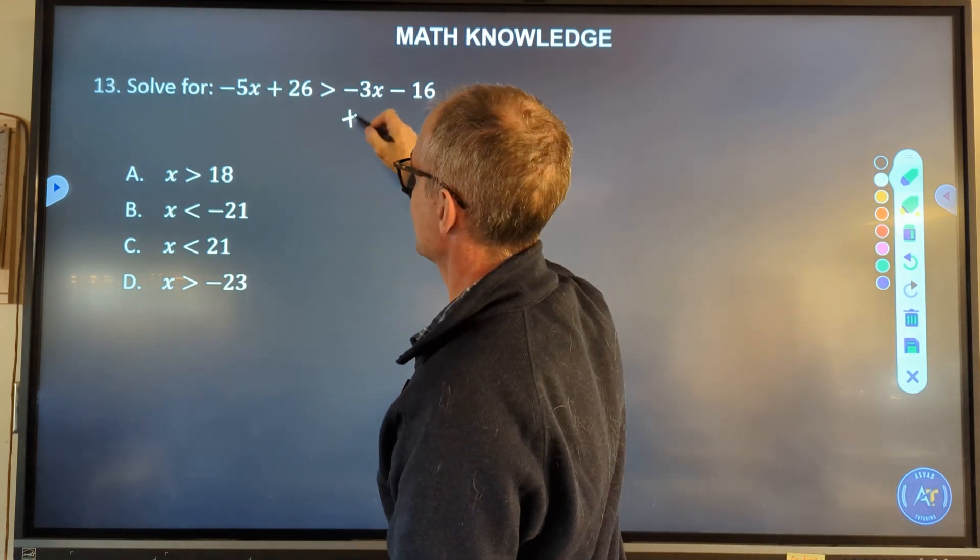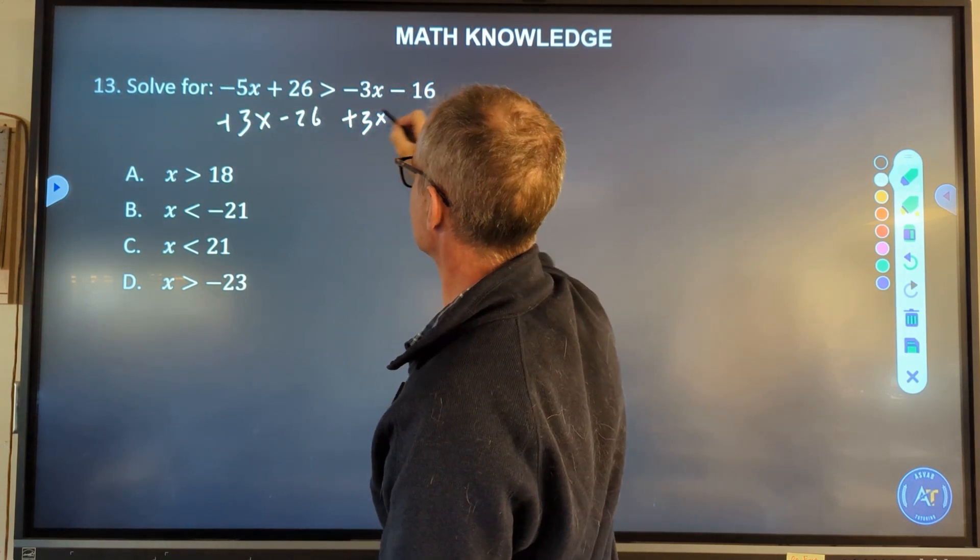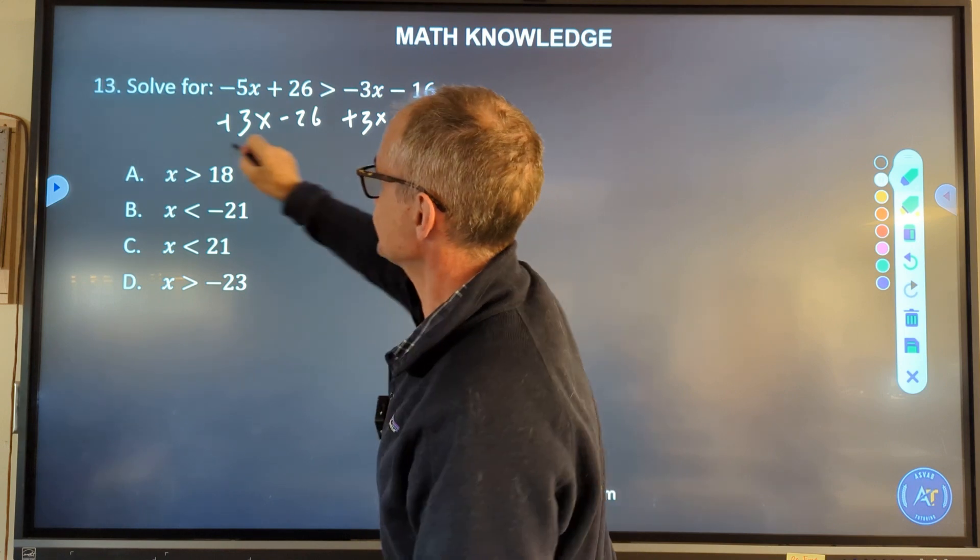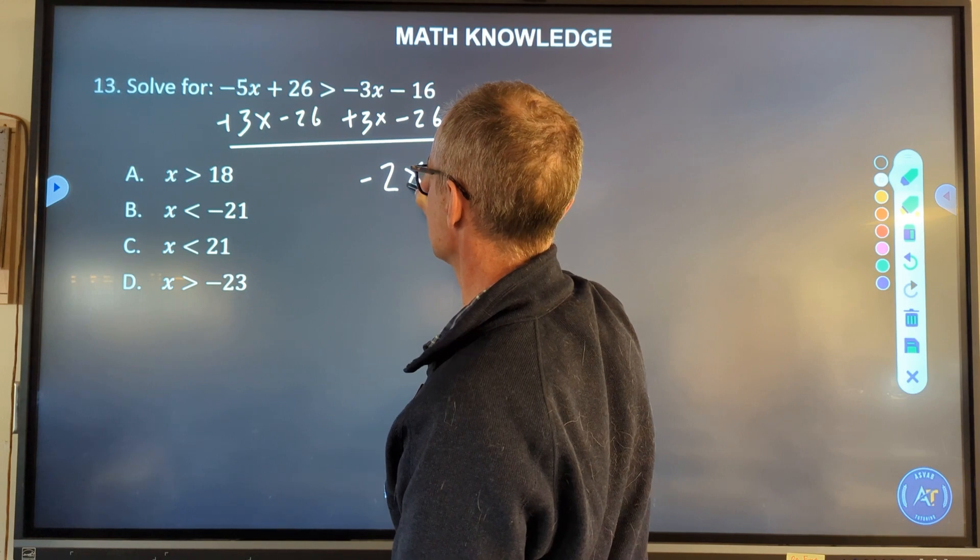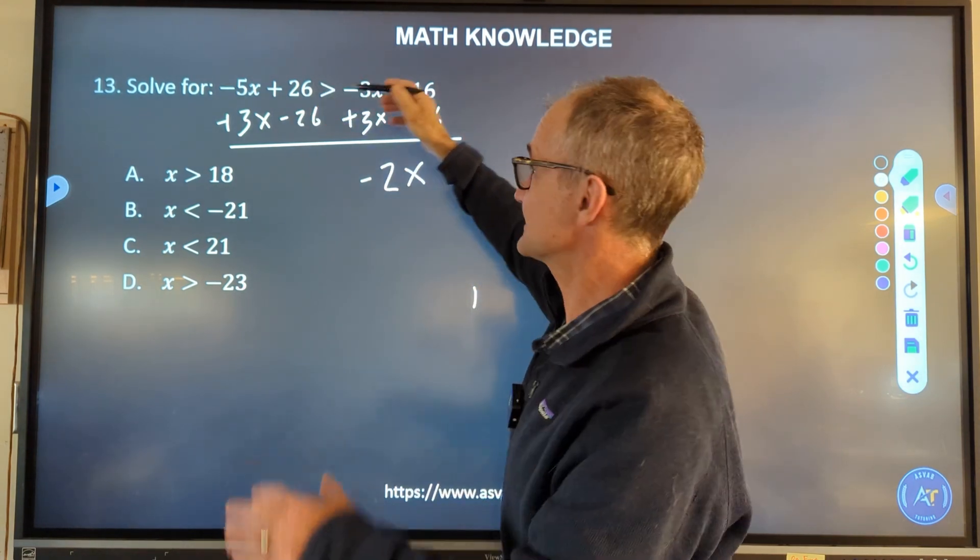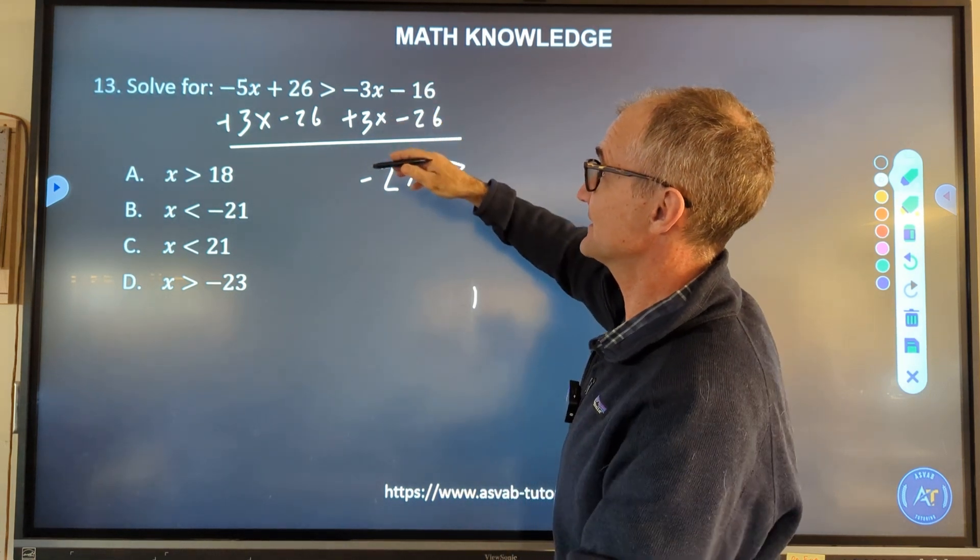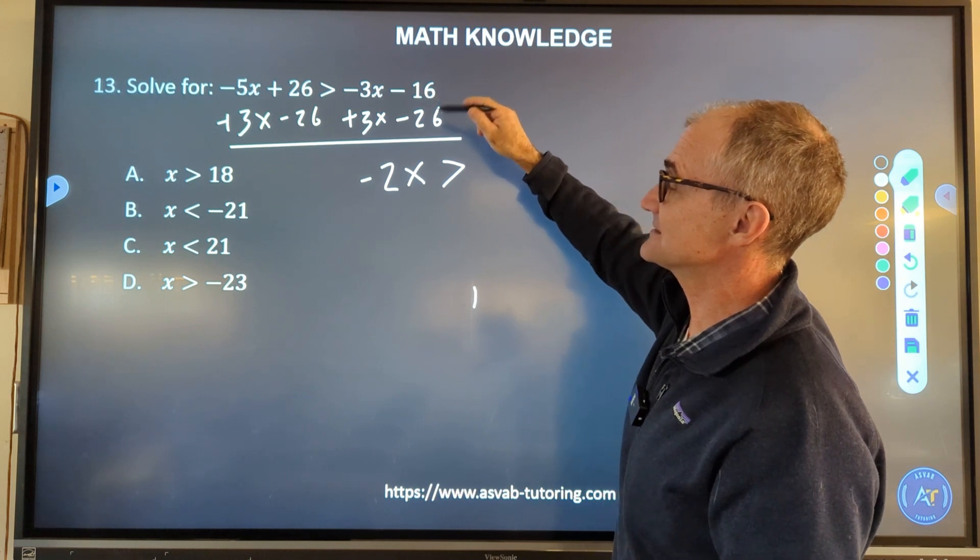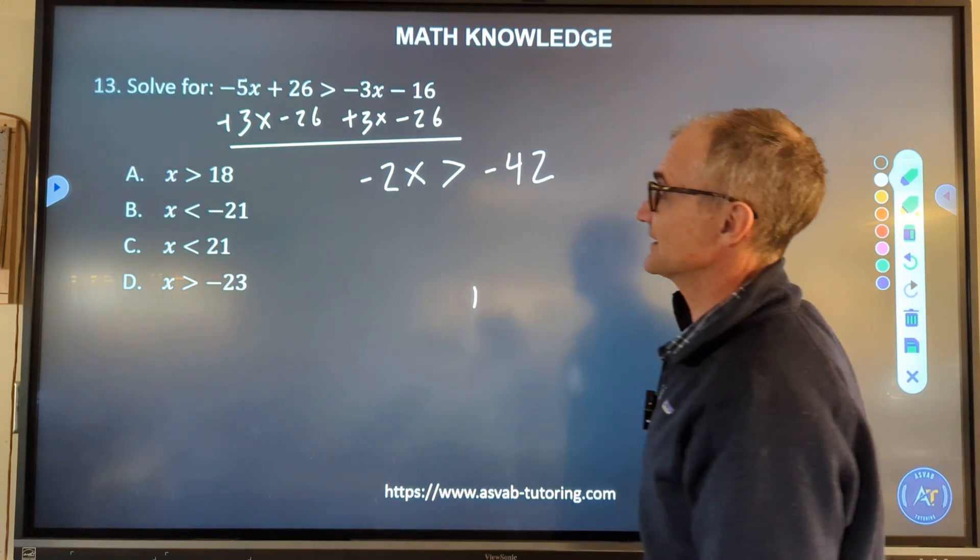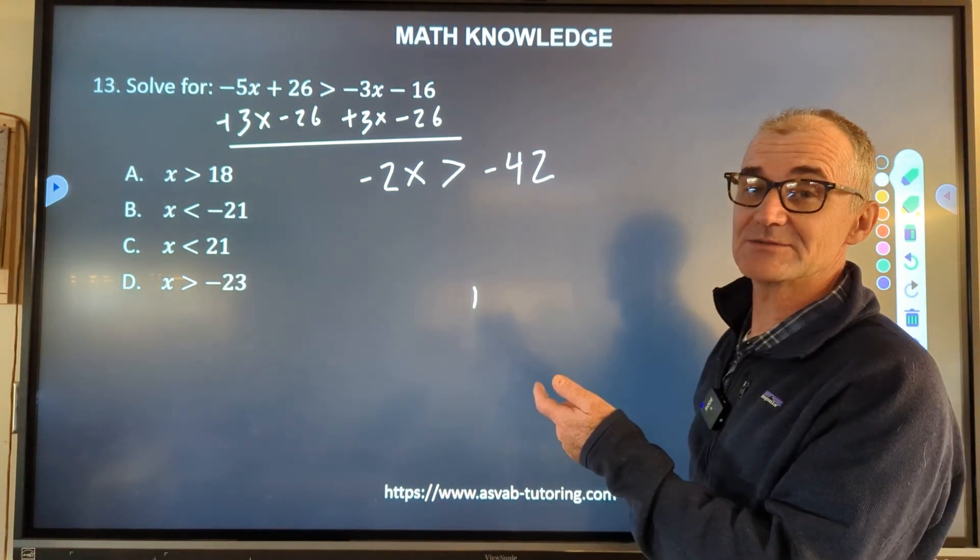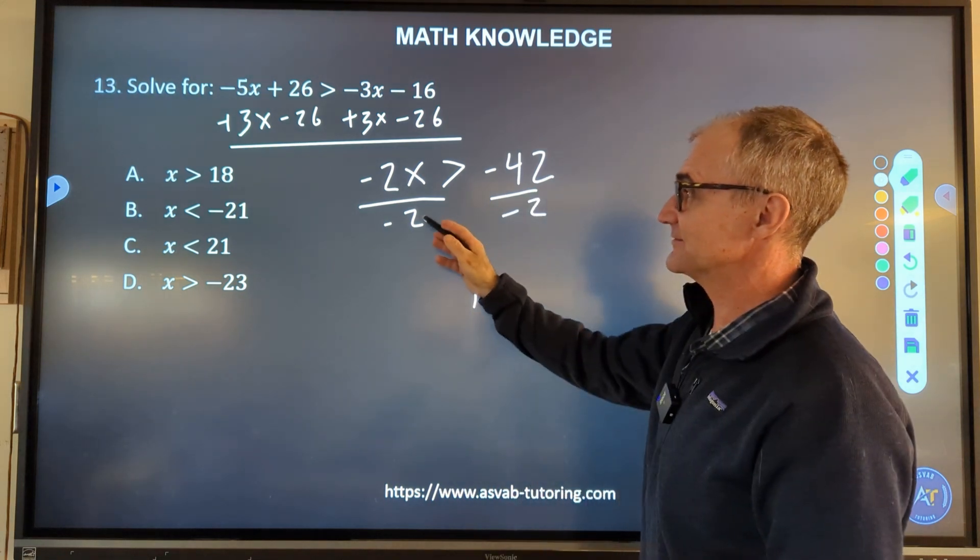So I'm going to do everything the same. Let me add 3x to both sides right there. Let me subtract 26 from both sides. I got -5x + 3x, that's going to give me -2x. 26 minus 26 are canceling. I have my greater than sign. -3x and 3x cancel. -16 plus -26 is -42.